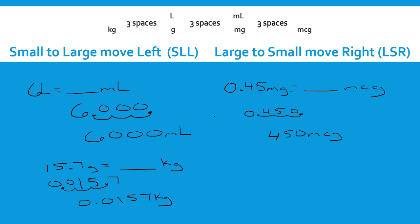So far we've only worked with units beside each other — liters to milliliters, milligrams to micrograms, grams to kilograms. What if the units are farther away? Let's say 16 milligrams equals how many kilograms. I need to move three spaces to get to grams and an additional three spaces to get to kilograms — six spaces total. Since I'm going from a small unit to a large unit, I move left: sixteen — one, two, three, four, five, six — giving me 0.000016 kilograms.